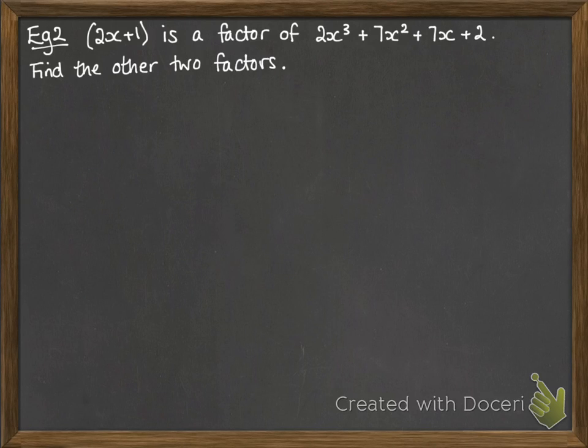Okay, 2x plus 1 is a factor of this cubic. We want to find the other two factors. So 2x cubed plus 7x squared plus 7x plus 2 is identically equal to 2x plus 1 multiplied by something. Now that something has to be a quadratic, because we're ending up with a cubic, we must have a quadratic there.